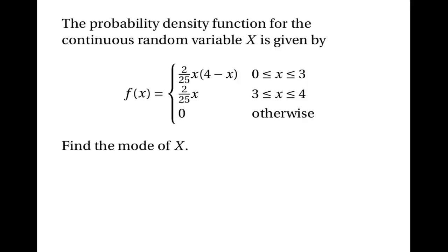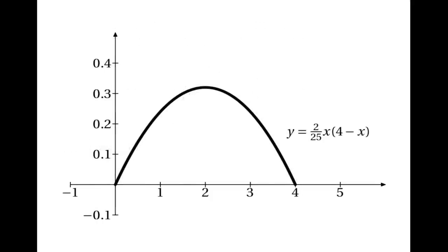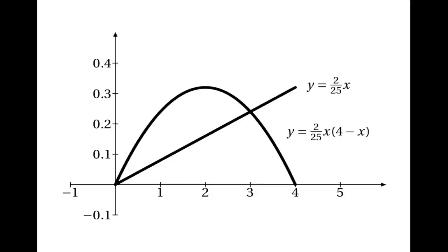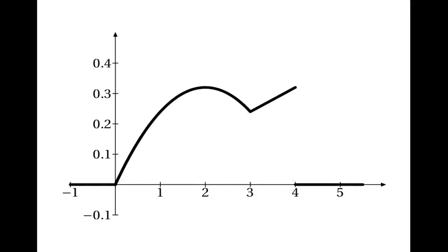So let's begin by sketching a graph. For the first piece, y = (2/25) · x · (4 − x) is a quadratic curve with zeros at x = 0 and x = 4, symmetric with a maximum at x = 2. For the second piece, y = (2/25) · x is a straight line through the origin with gradient 2/25. Combining these, remembering f(x) = 0 outside [0, 4], this is what the PDF actually looks like.